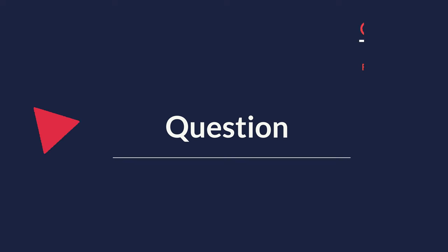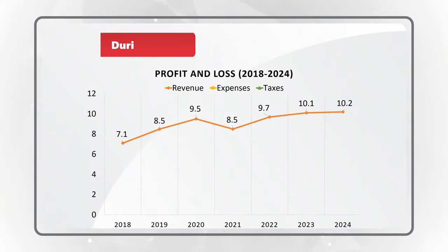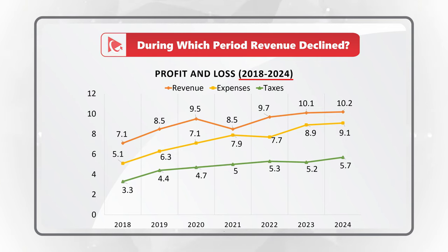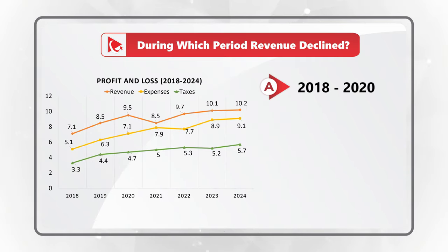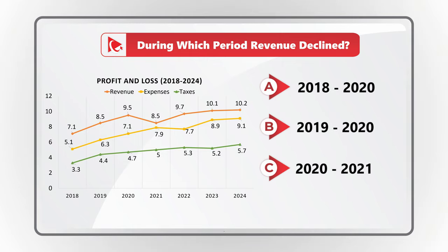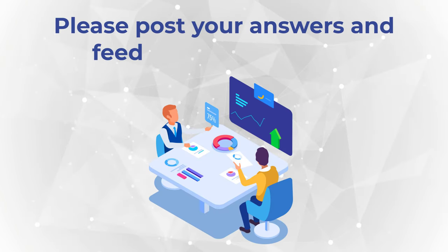Now it's time for you to practice your skills. You're presented with a chart of profit and loss between 2018 and 2024, showing revenue, expenses, and taxes. You need to determine during which period revenue declined. You have four choices: 2018 to 2020, 2019 to 2020, 2020 to 2021, and 2023 to 2024. I truly hope with the skills you've learned here you can quickly identify the answer and post it in the comments. Thanks for participating and good luck!